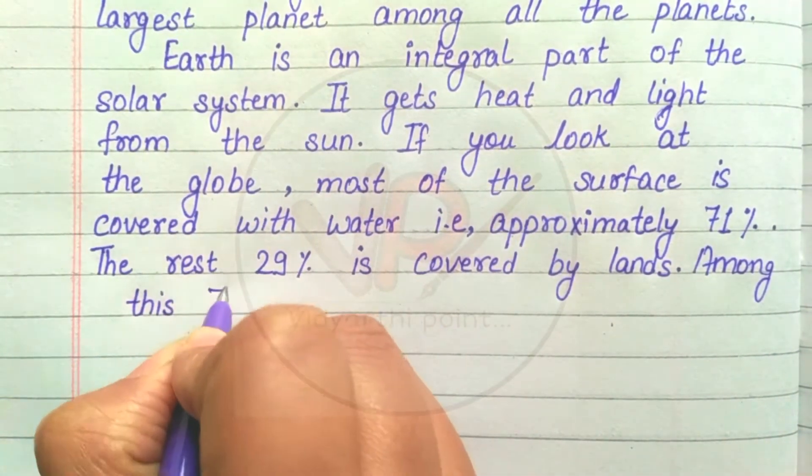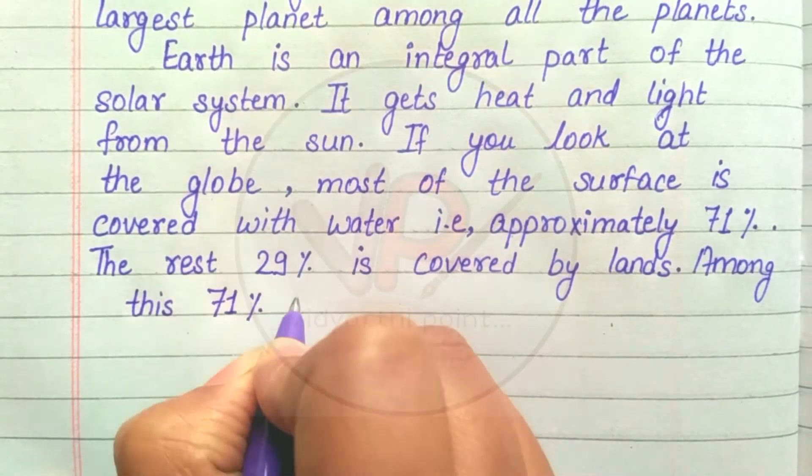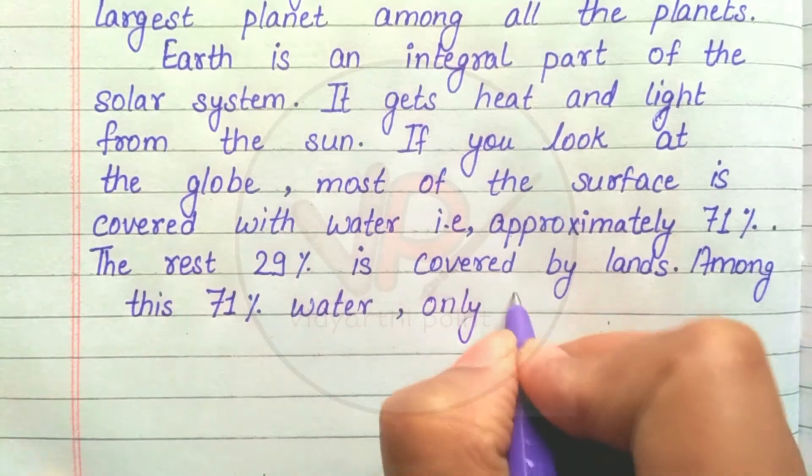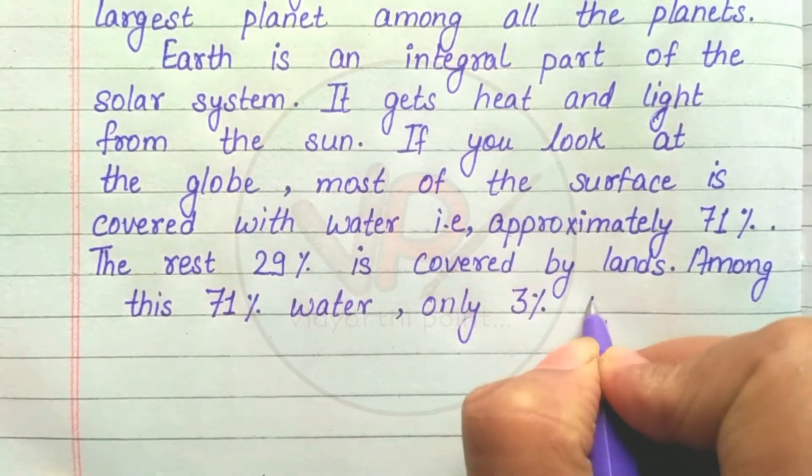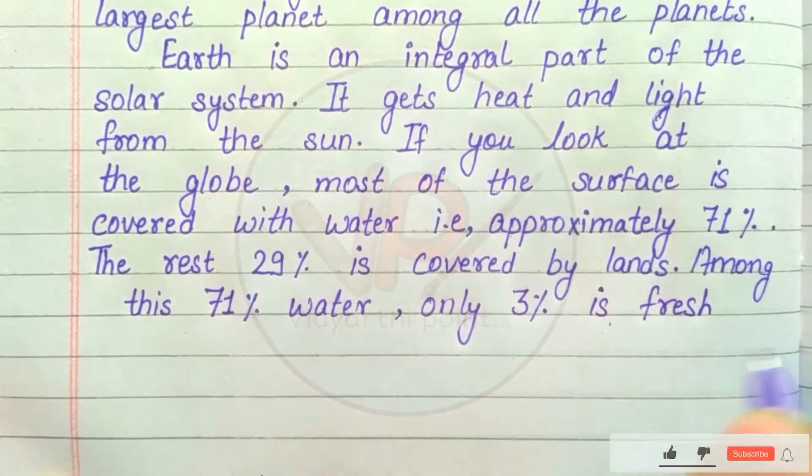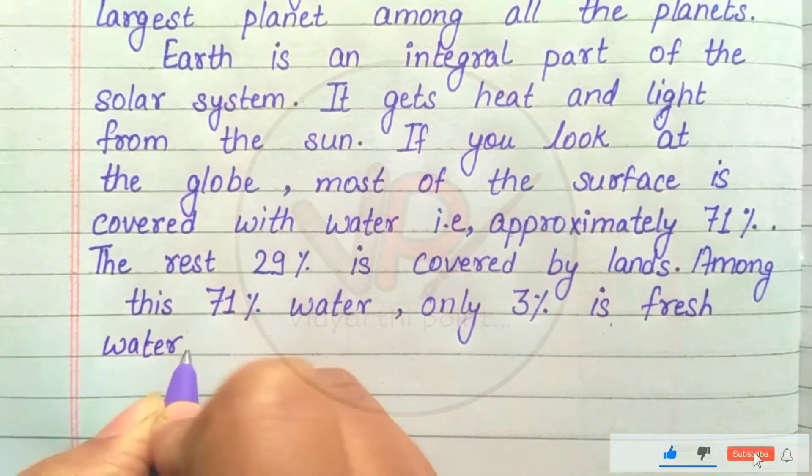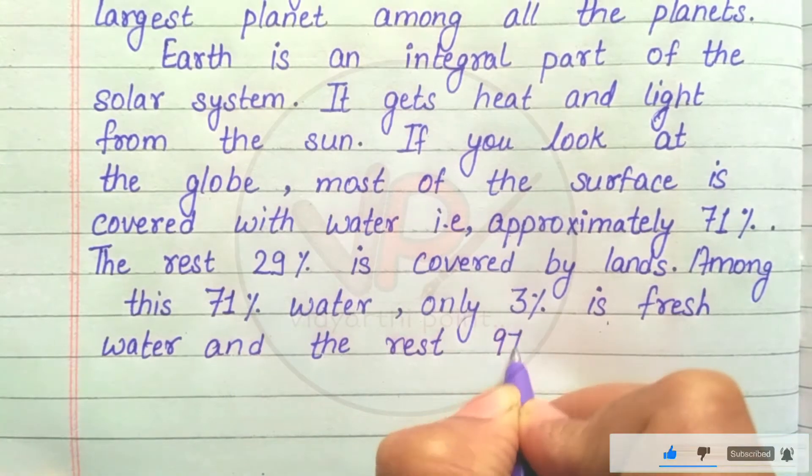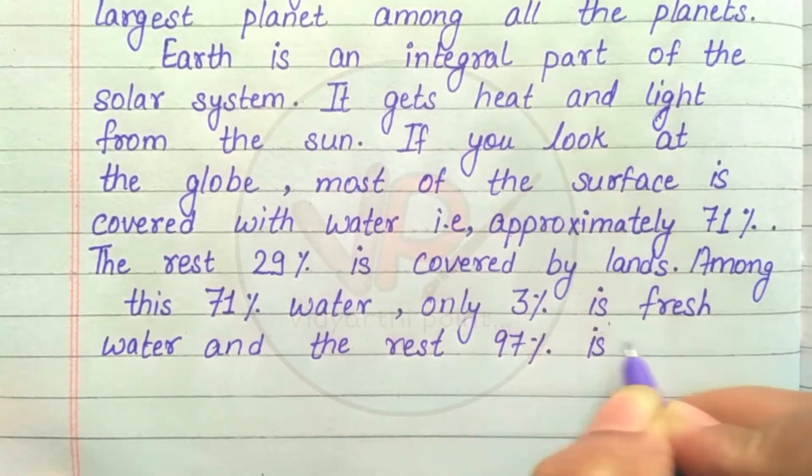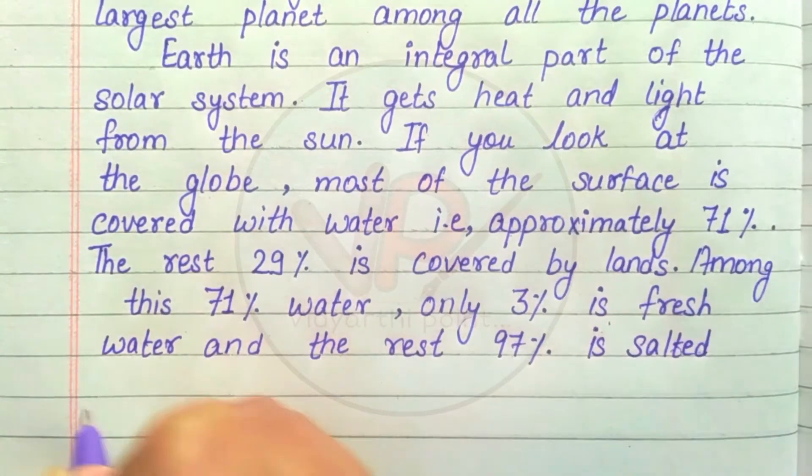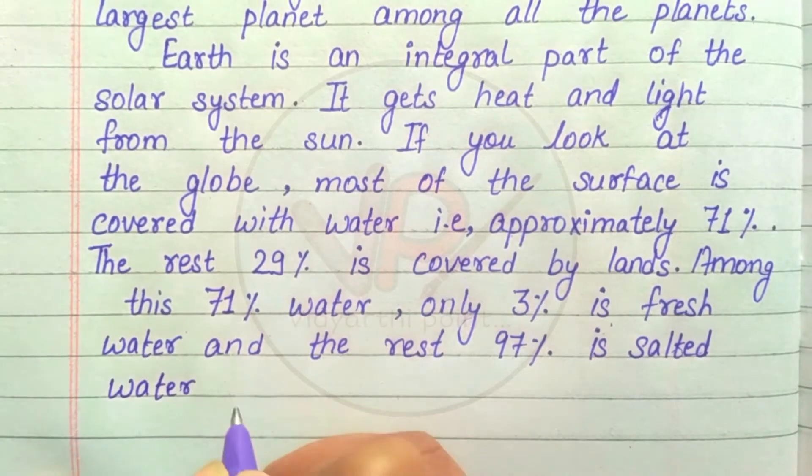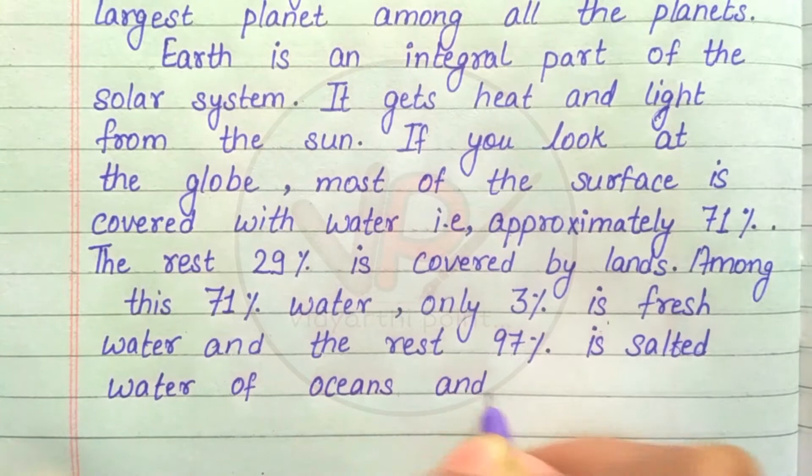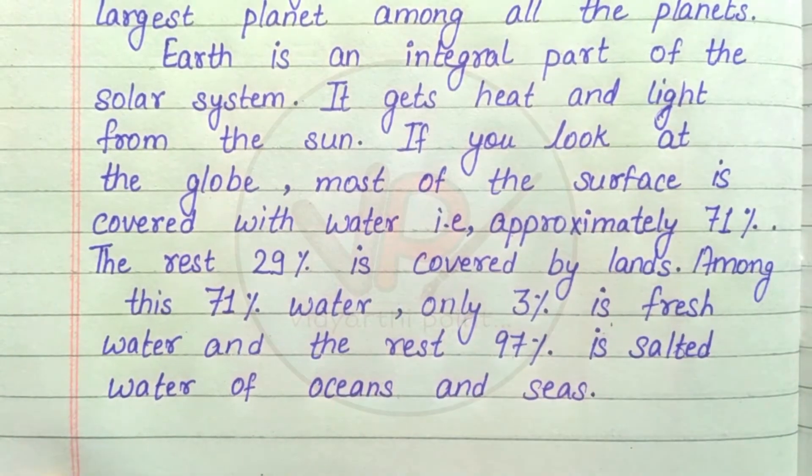Among this 71% water, only 3% is fresh water and the rest, 97%, is salted water of oceans and seas.